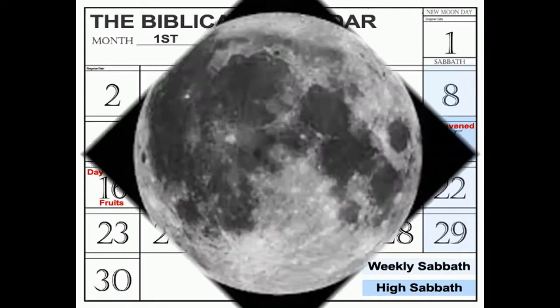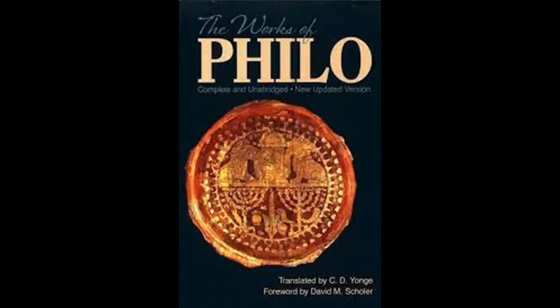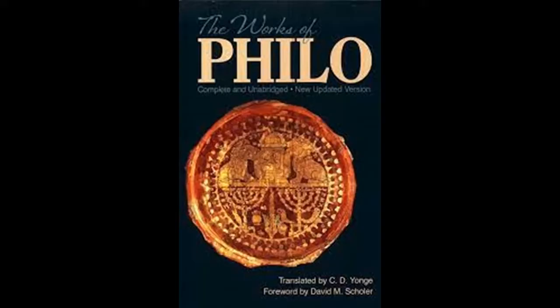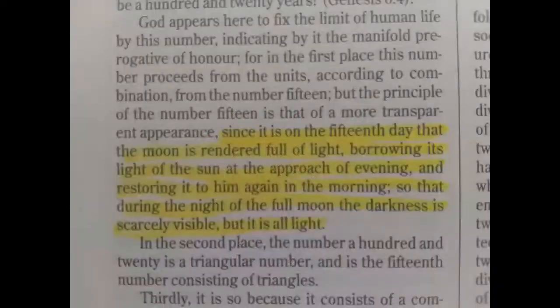Now I stated before that the moon was a full moon. Let's see what Philo says about this day. The works of Philo, Questions and Answers on Genesis 1, paragraph 91, it states: 'Since it is on the 15th day that the moon is rendered full of light, borrowing its light from the sun, at the approach of evening, and restoring it to him again in the morning. During the night of the full moon, the darkness is scarcely visible, but it is all light.'